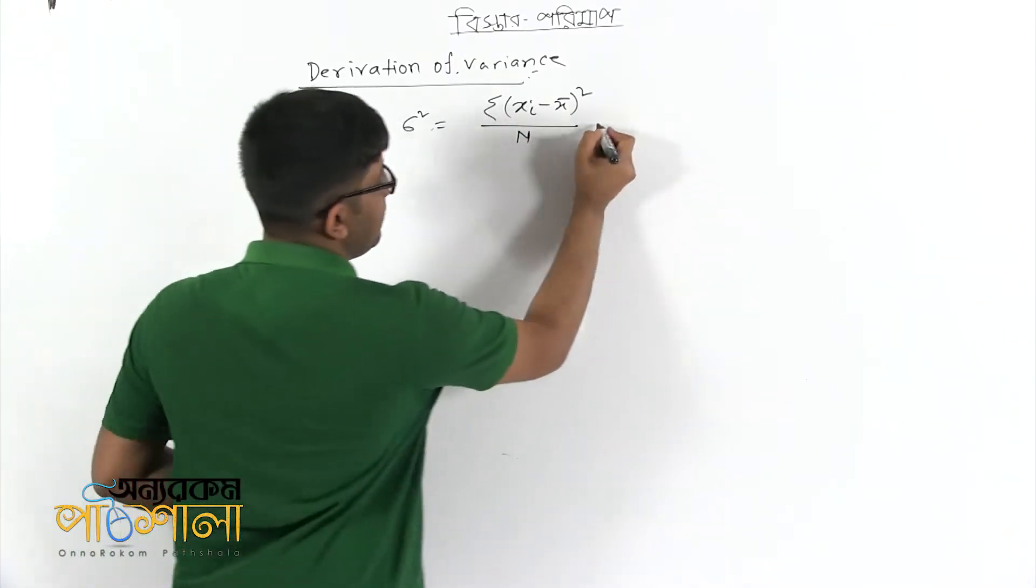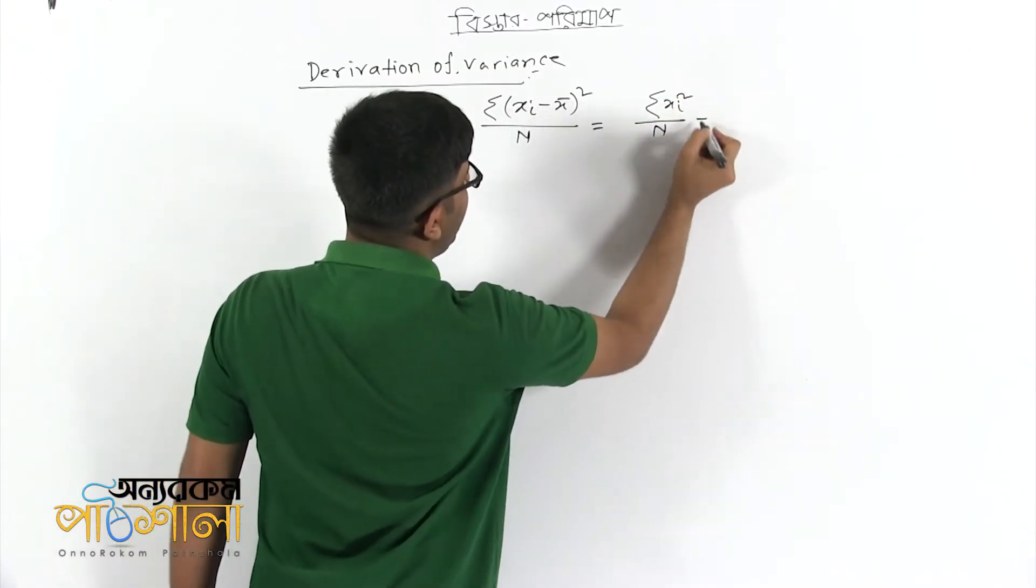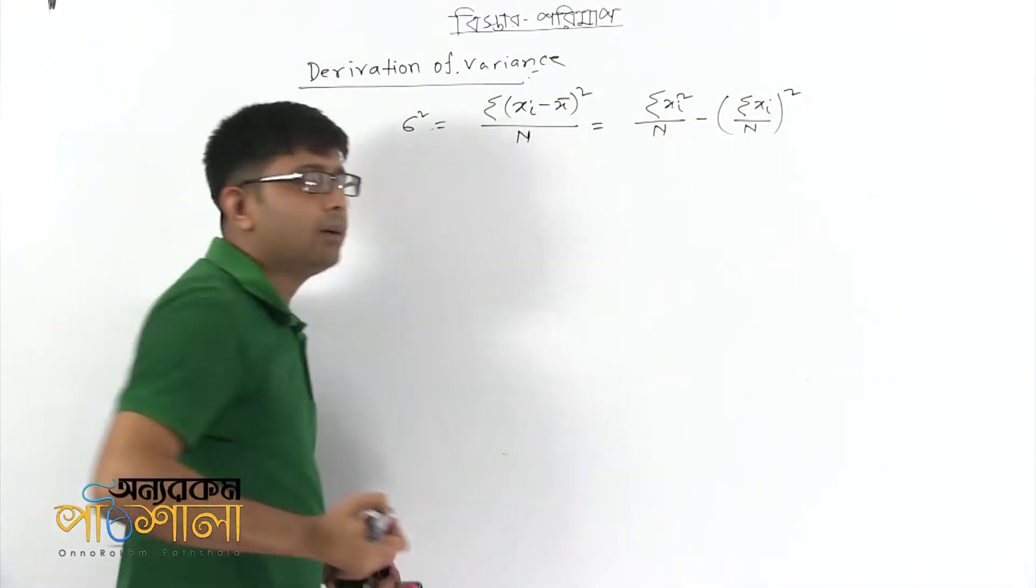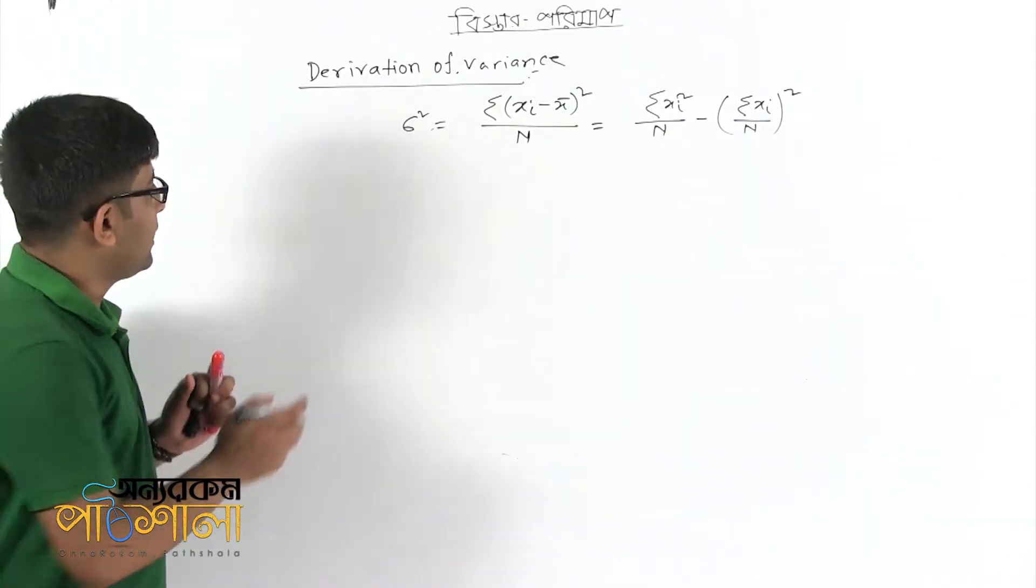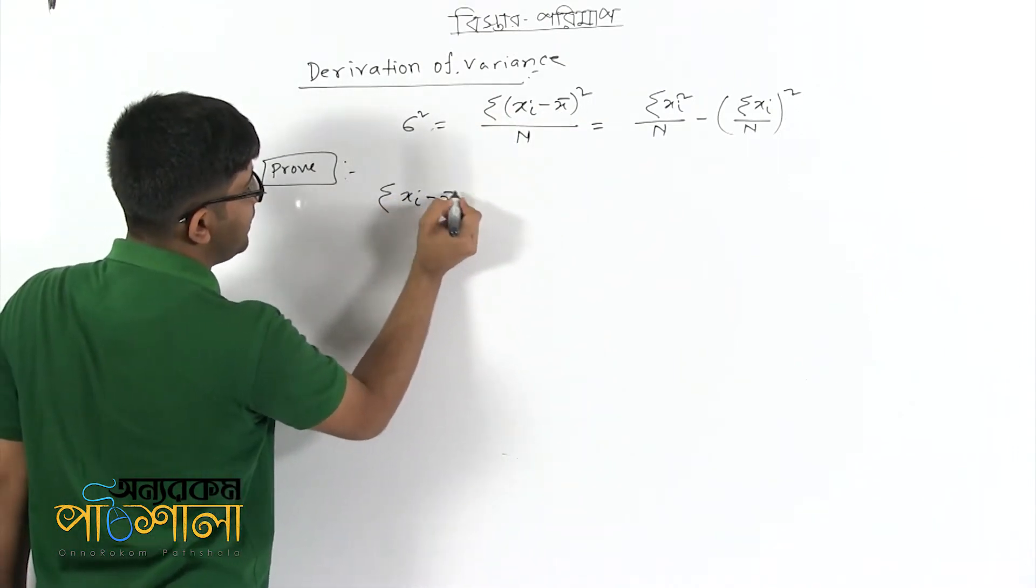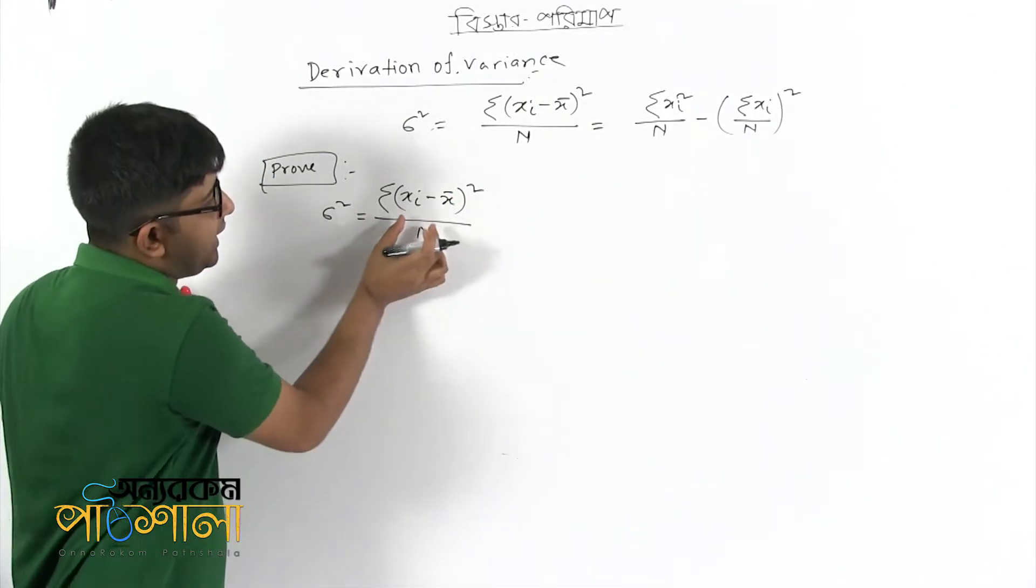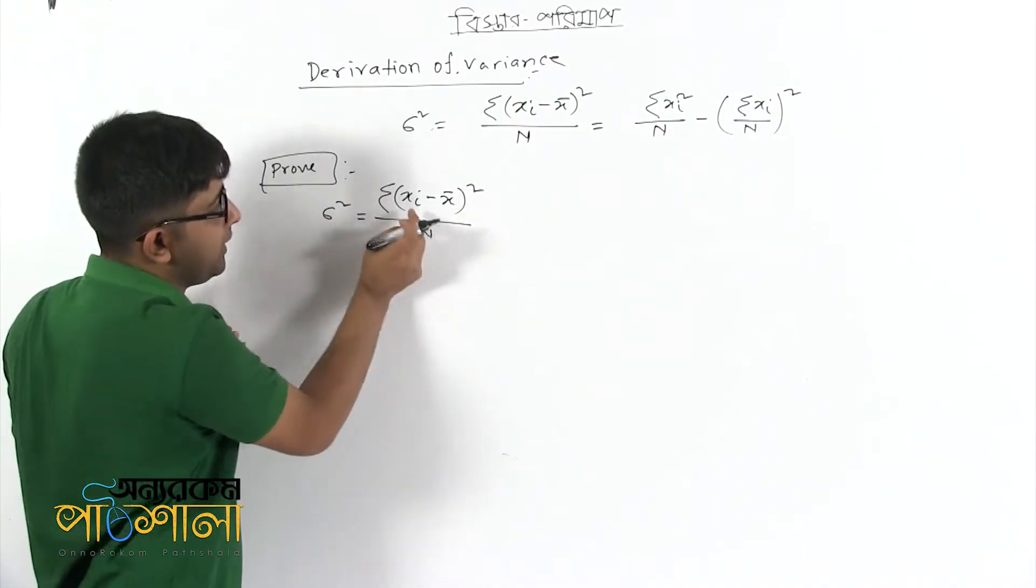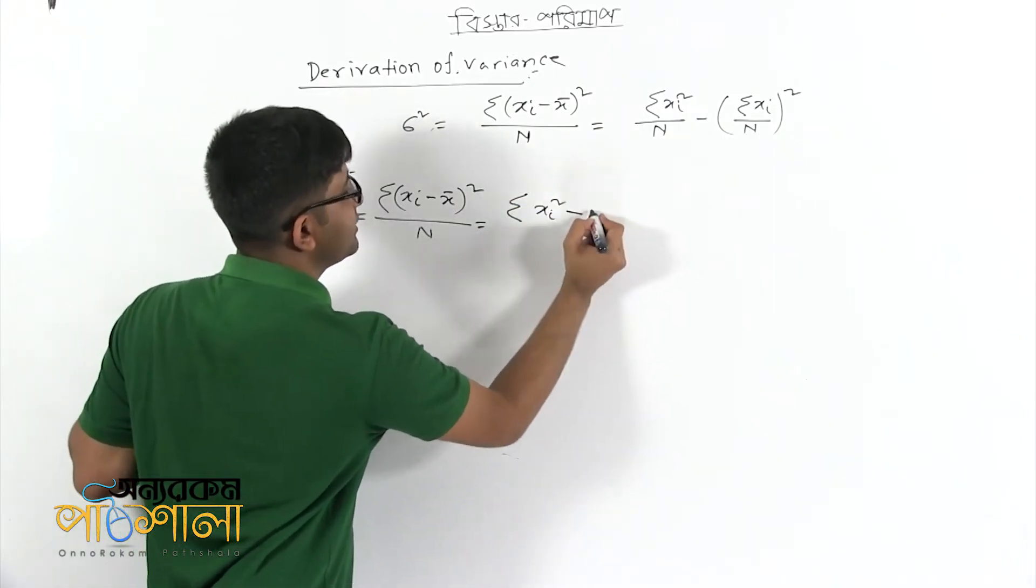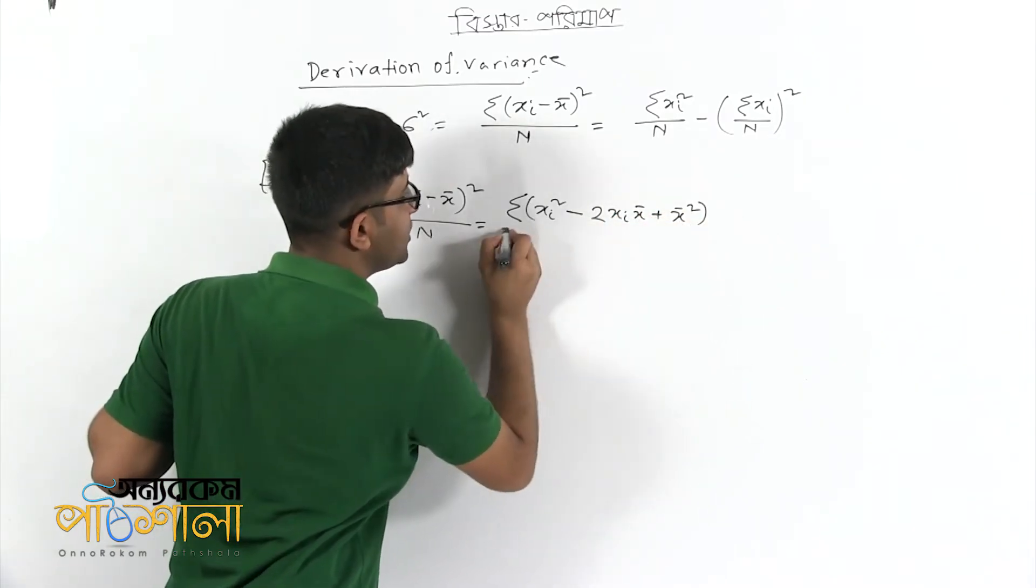We can write this as summation of xi square divided by n minus summation of xi divided by n. Expanding the squared term using a square minus 2ab plus b square, we get that total summation divided by n.